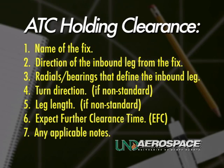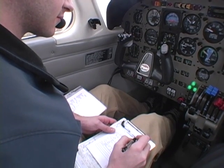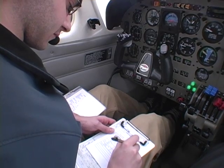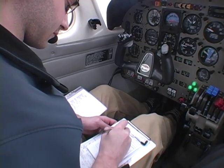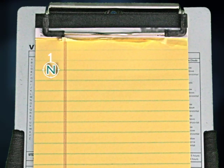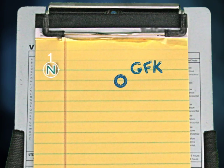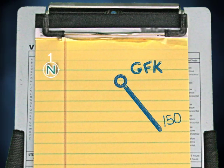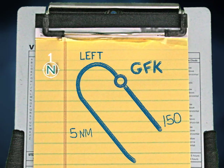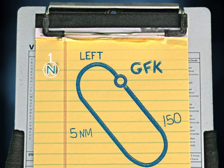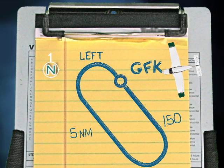It is the PIC's responsibility to copy and comply with the clearance or to advise ATC if unable. So with your kneeboard, how would you, as the pilot, draw this pattern? The pilot was cleared direct to the Grand Forks VOR — that's the fix. ATC specified holding southeast on the 150-degree radial, so that leg should be drawn from the fix in the specified direction. Since it was a non-standard pattern, ATC advised left-hand turns and 5-mile legs. Once the pattern is visualized, the pilot can then decide his or her position from the fix and how to enter the hold.